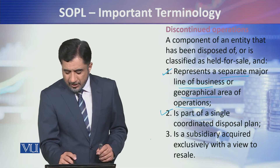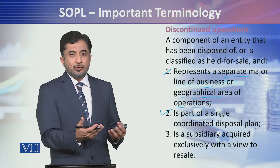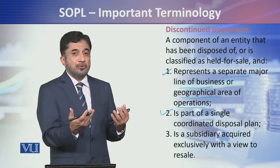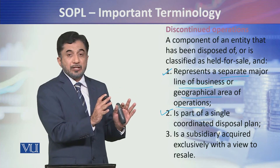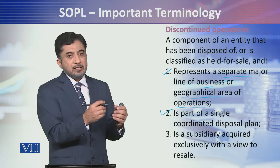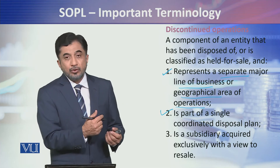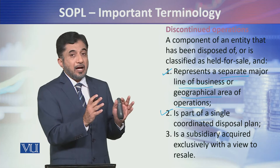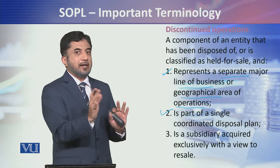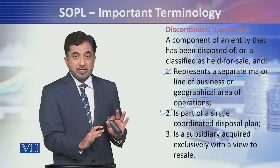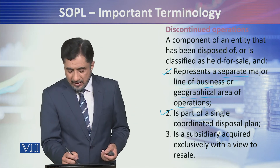यह कहता है कि it's a part of a single coordinating disposal plan। आपने उसको discontinued operation के तोर पर या held for sale के तोर पर रखना है, तो एक single coordinated disposal plan होनी चाहिए — आपने एक solid plan बना लिया है, जिसको dispose of करना है, held for sale हो गया, पूरा का पूरा segment — चाहे वो geographical हो या आपकी business line।